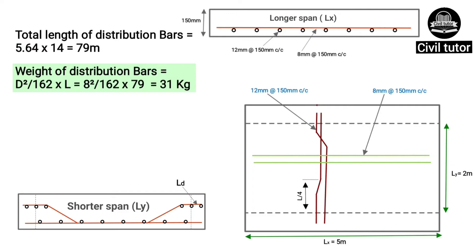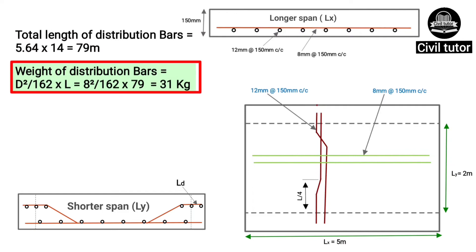Weight of distribution bars = D² ÷ 162 × total length of distribution bars (79m). On substituting these values, the total weight of distribution bars = 31kg.